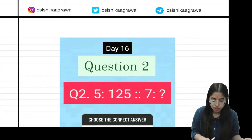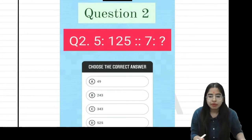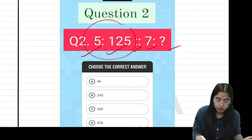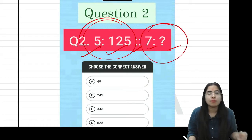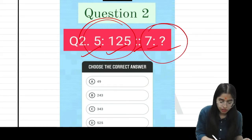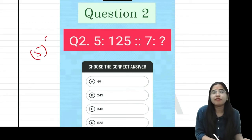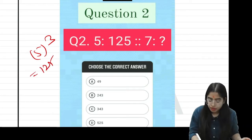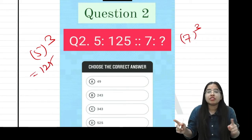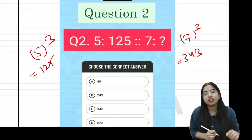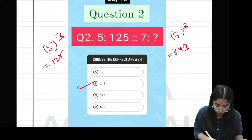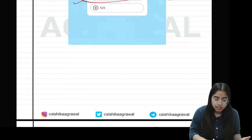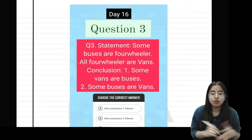Let's see the next question. This is another analogy question with a number series: 5 is to 125 as 7 is to what? Find the same relation between 5 and 125, then apply it to 7 and the missing number. The relation is 5 cubed equals 125, so 7 cubed equals 343.